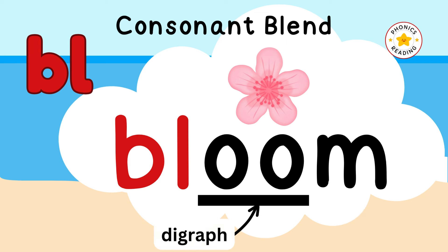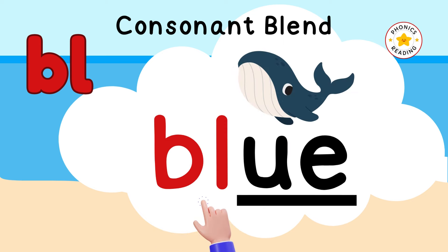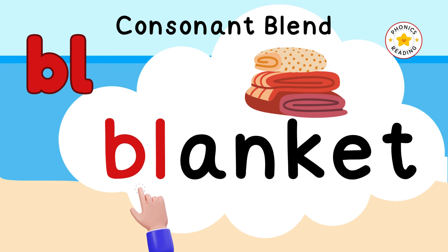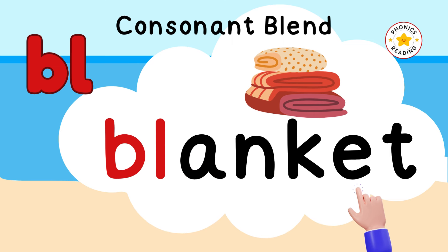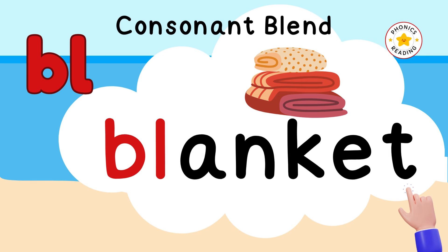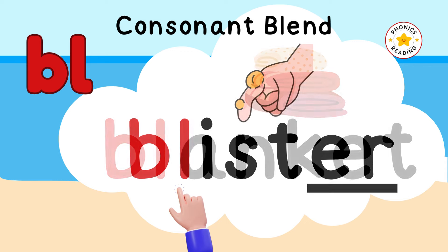Digraphs are two letters that make a new sound. BL, O — blue. U, E is a digraph. U, E is a digraph; it can make either the U or OO sound. BL, A, N, K, E, T — blanket.